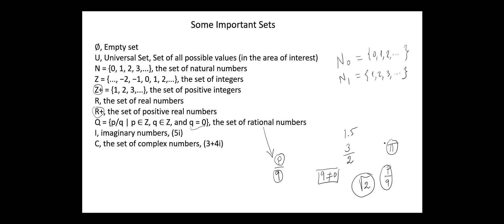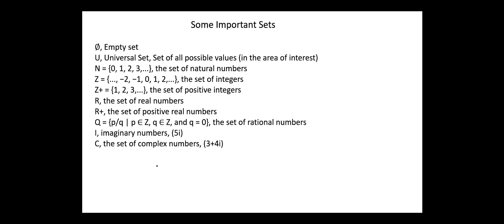I is the set of imaginary numbers. For example, 5i, where i is the complex value √(−1). C is the set of complex numbers. For example, 3 + 4i is a complex number. Regarding prime numbers, in some literature the letter P is used, and we have to clarify that this is the set of prime numbers. So we can write P = {p ∈ N | p is a prime}.